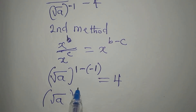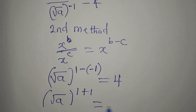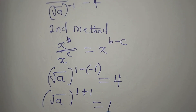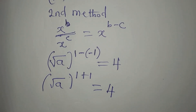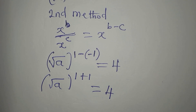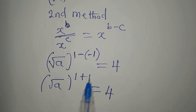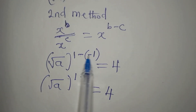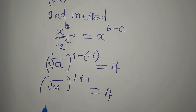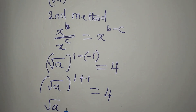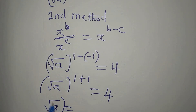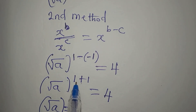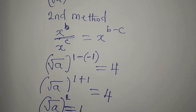So root a to the power of one plus one is equal to four. Opening the bracket, one minus negative one gives one plus one, which is two. So root a to the power of two equals four.